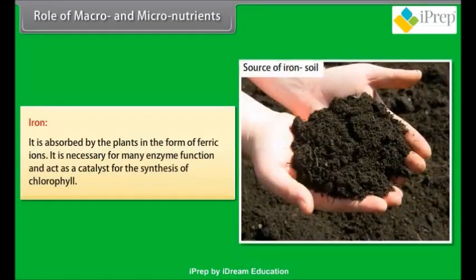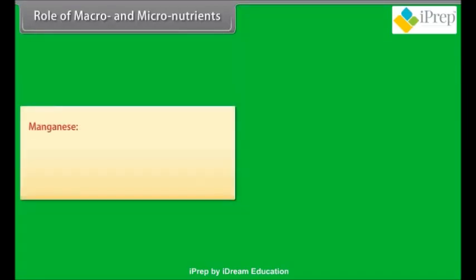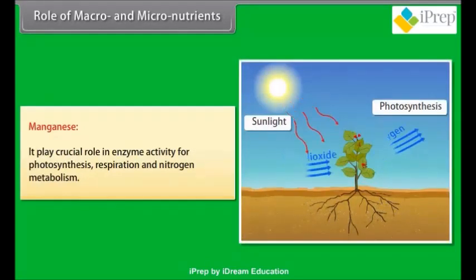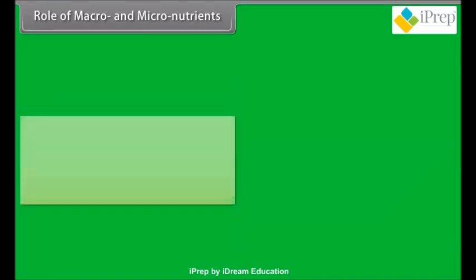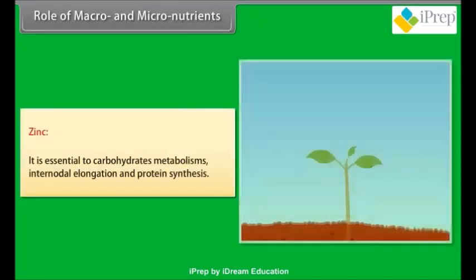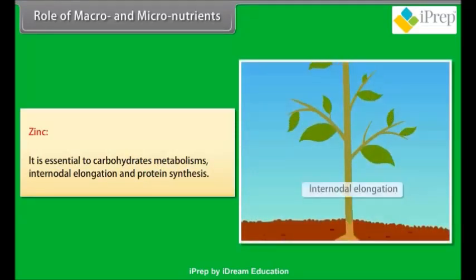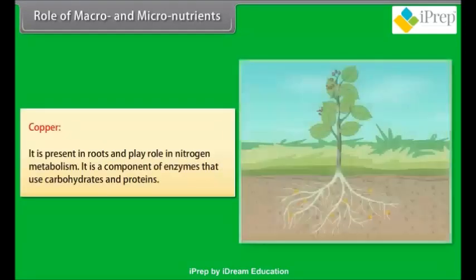Iron: it is absorbed by plants in the form of ferric ions. It is necessary for many enzyme functions and acts as a catalyst for the synthesis of chlorophyll. Manganese: it plays a crucial role in enzyme activity for photosynthesis, respiration, and nitrogen metabolism. Zinc: it is essential to carbohydrate metabolism, internodal elongation, and protein synthesis. Copper: it is present in roots and plays a role in nitrogen metabolism; it is a component of enzymes that use carbohydrates and proteins.